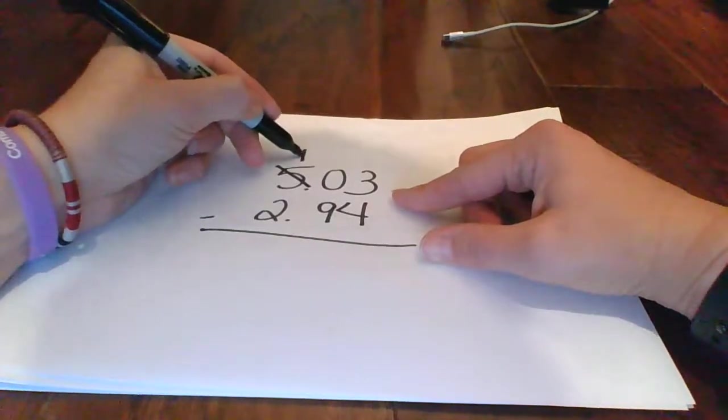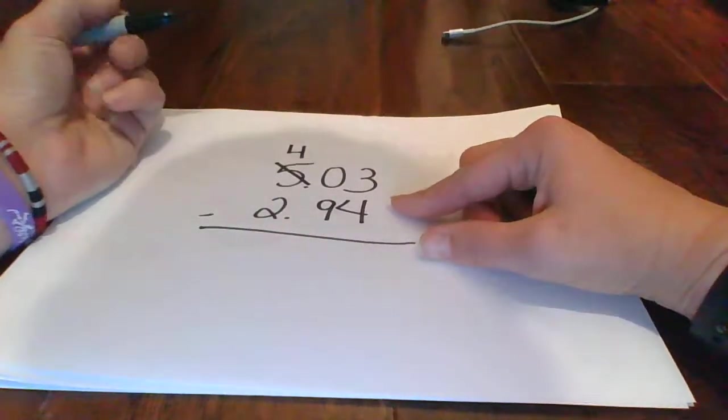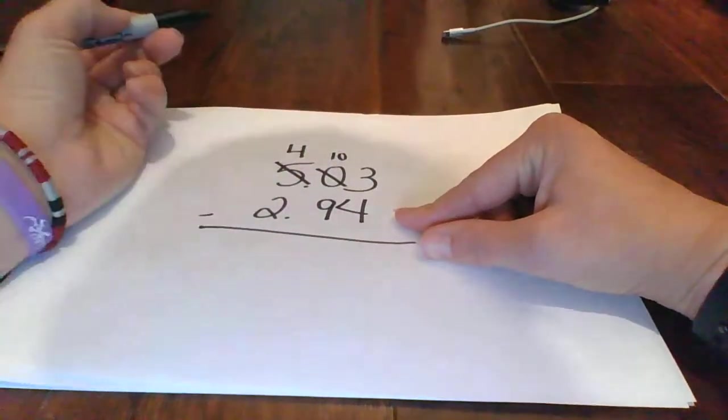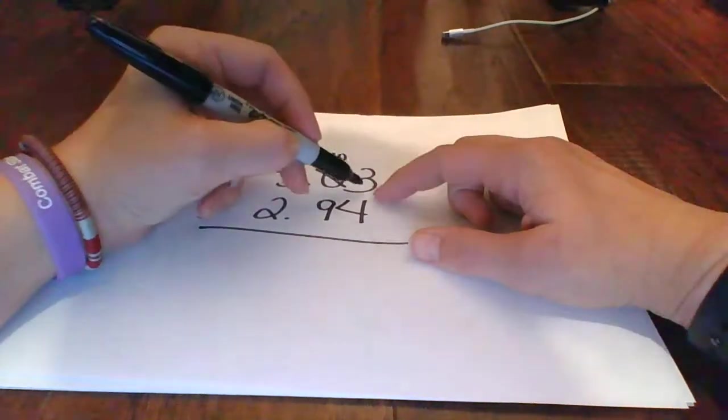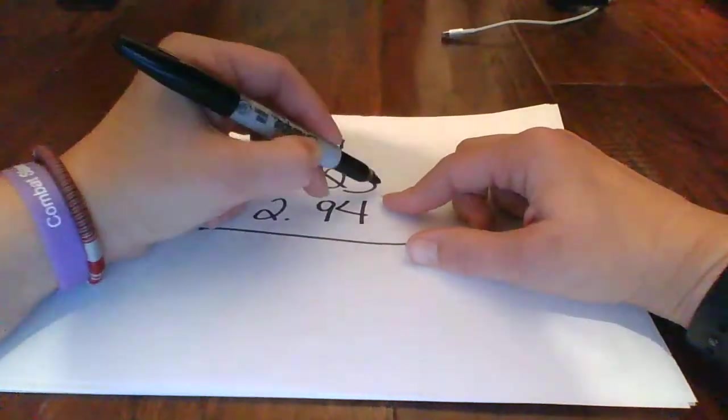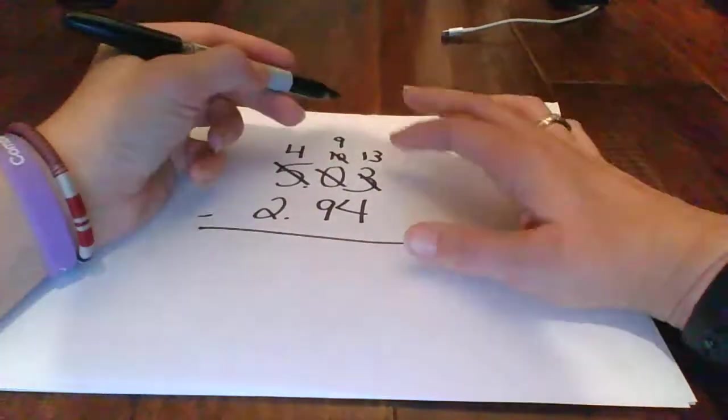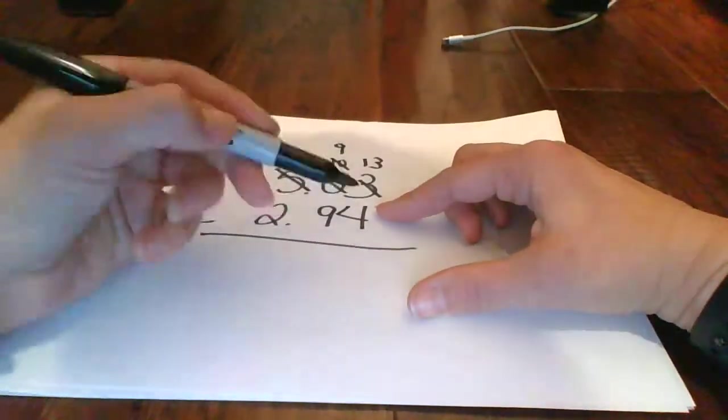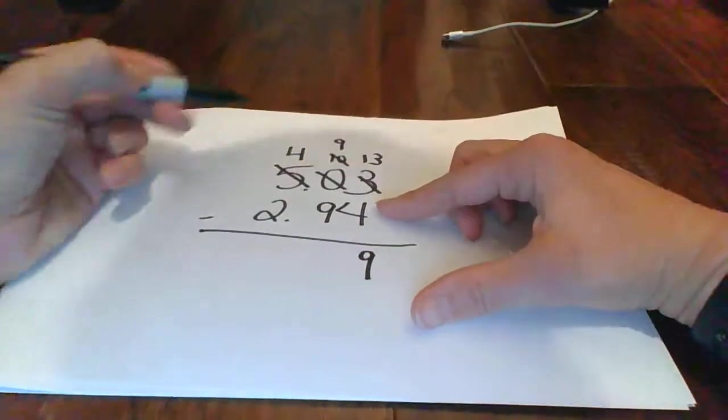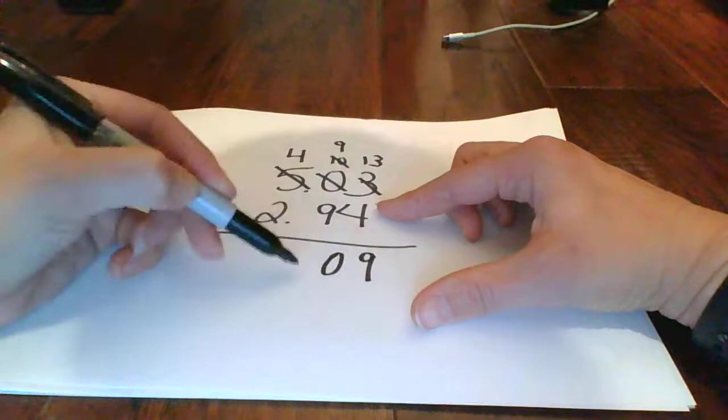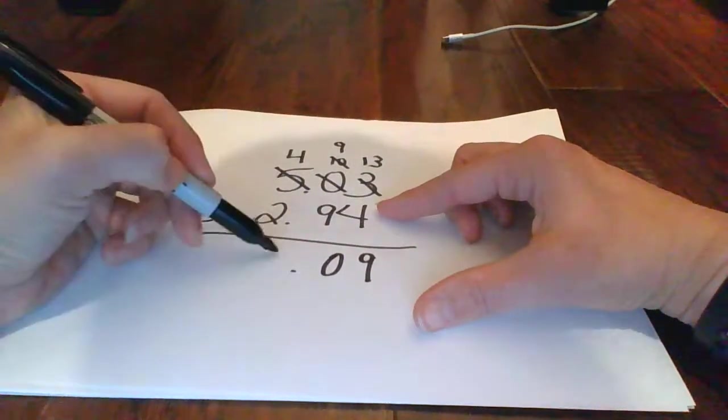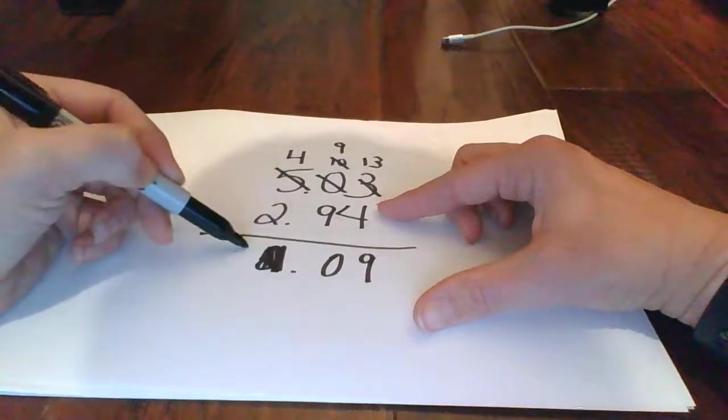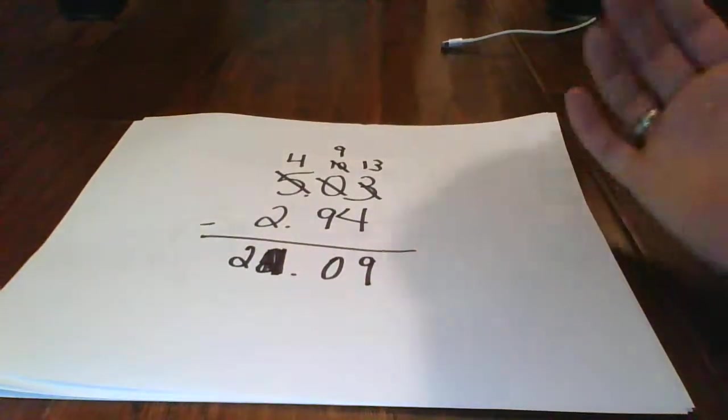And that becomes a 4. And so then this becomes a 10. But then I need it over here. So this then becomes a 9, and this becomes a 13. When I do 13 minus 4, I get 9. And then 9 minus 9 is 0. And then 4 minus 2 is 2. So 2.09 is what you have.